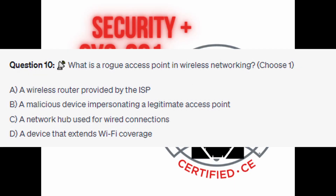Question number ten: What is a rogue access point in wireless networking? Choose one. Is it A. A wireless router provided by the ISP? Is it B. A malicious device impersonating a legitimate access point? Is it C. A network hub used for wired connections? Or is it D. A device that extends Wi-Fi coverage?